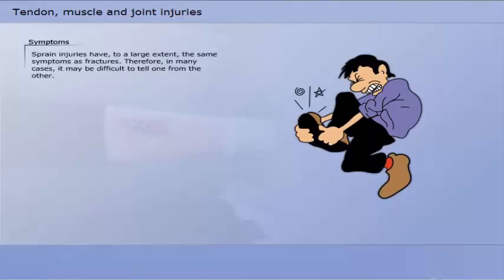Sprain, an acute tendon, muscle or joint injury, is the result of the tissue being, for a short moment, exposed to a greater force or more pressure than it can endure, for example caused by push, thrust or blow.